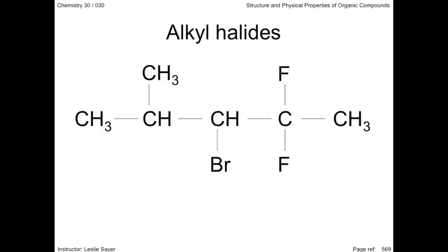Here we have a pentane chain with a methyl group, a bromine, and two fluorines. Bromine is listed alphabetically first, then the fluorines, and finally the methyl group. Carbon 1 is the one on the end closest to the first halogen — in this case, the far right. So we have 3-bromo-2,2-difluoro-4-methylpentane.